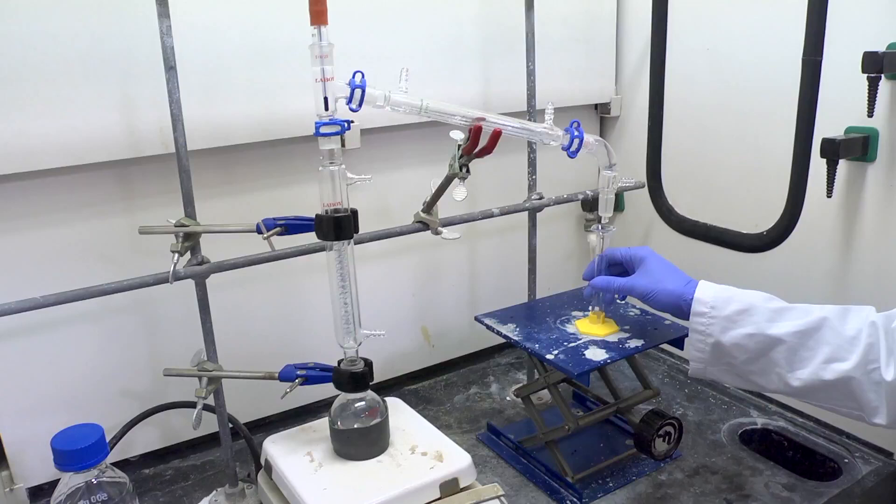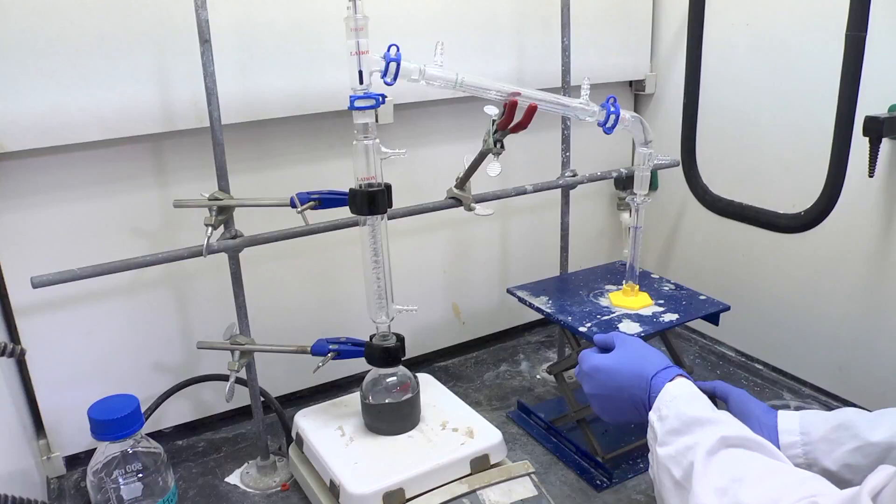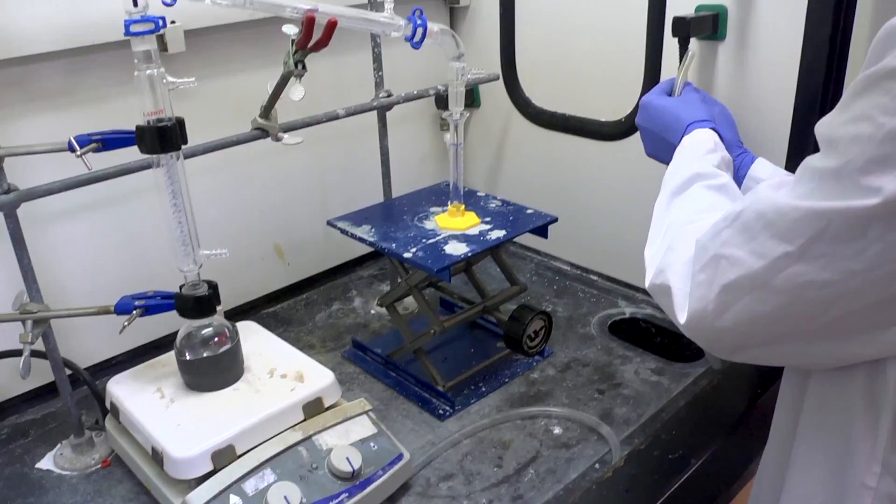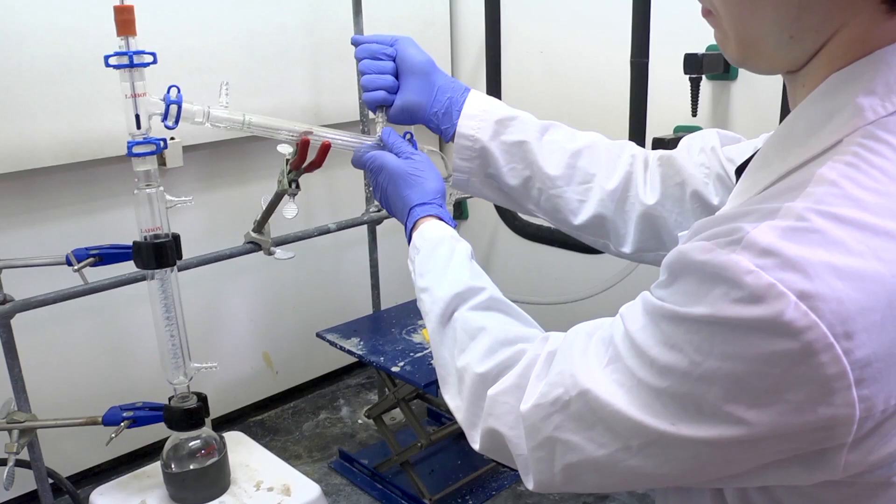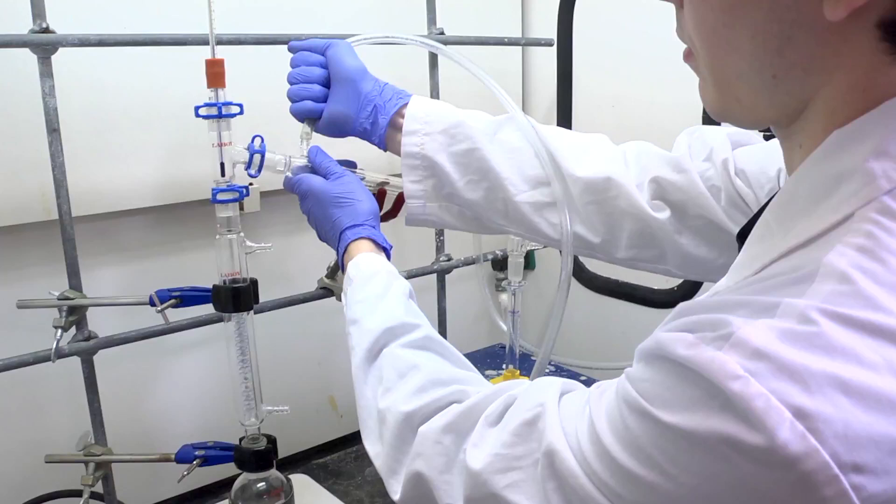Now you can set the graduated cylinder beneath to collect the distillate. Make sure your setup can be lowered in case the mixture gets too hot. Check the joints to see that they are a tight fit. Secure the hose to the water outlet and then to the lower projection on the skinny condenser. Add the second hose and then to the top, and make sure that it runs to the sink.